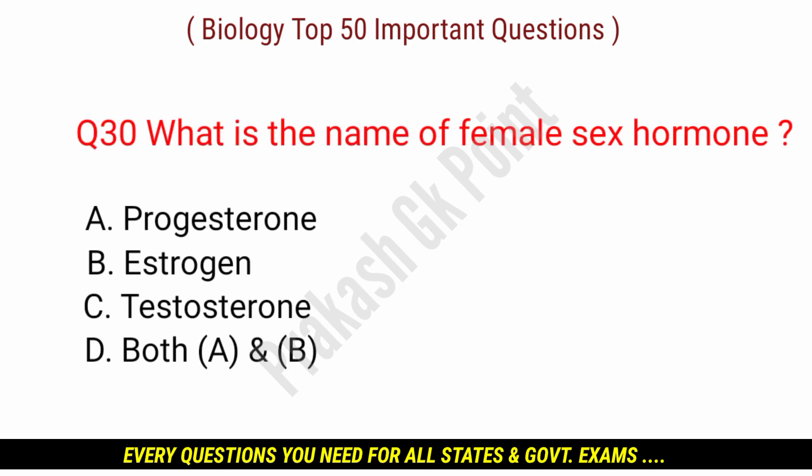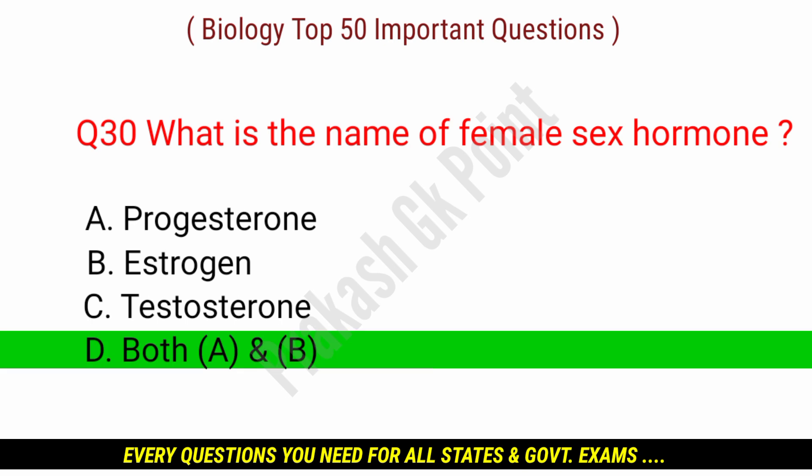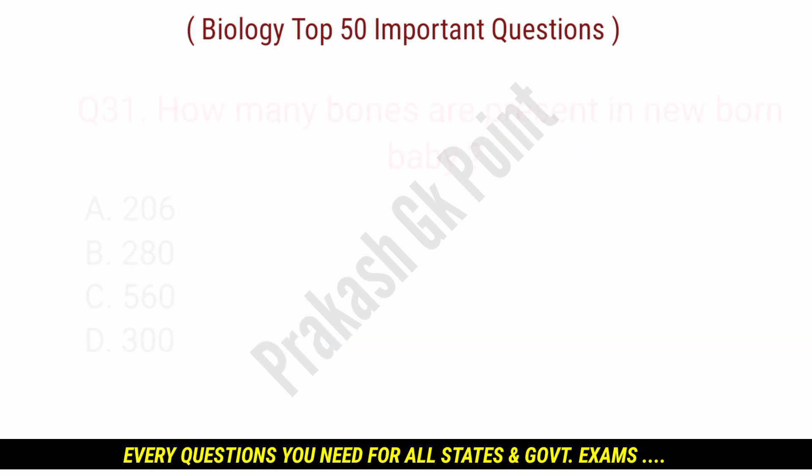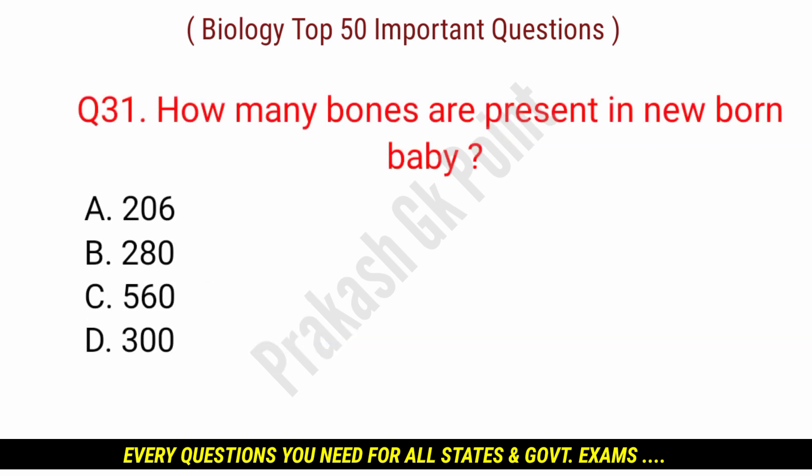Next question: what is the name of the female sex hormone? Answer: option D — both A and B, Progesterone and Estrogen. How many bones are present in a newborn baby?